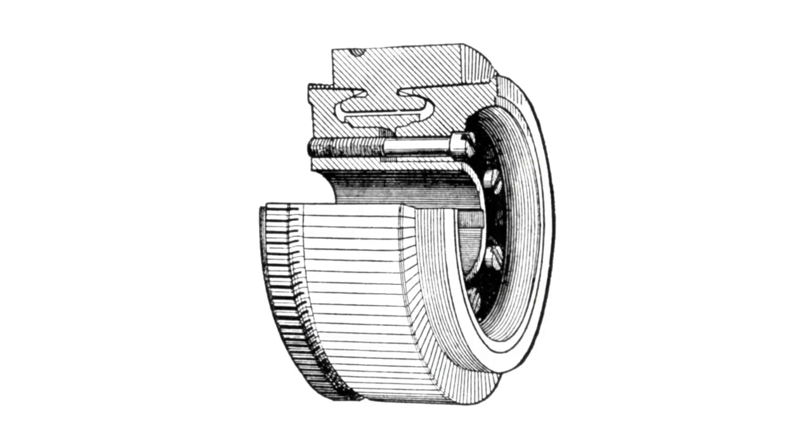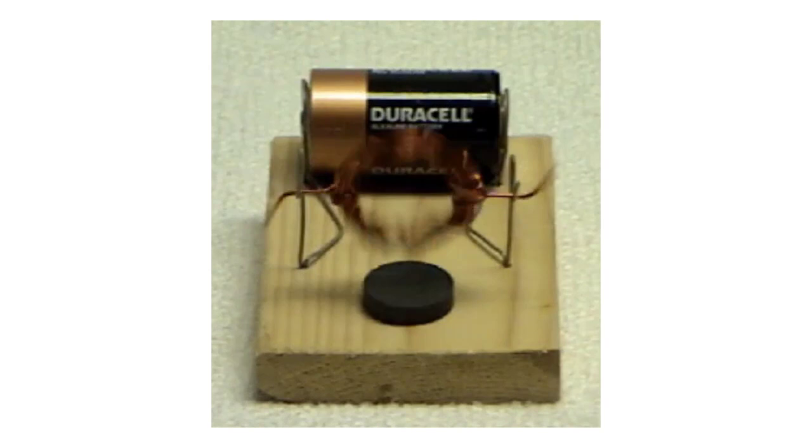When an electric motor has come up to speed, the average torque is just balanced by a combination of air resistance and friction in the bearings and commutator.